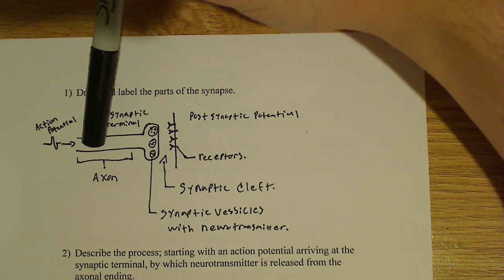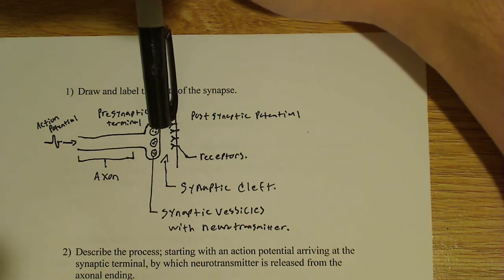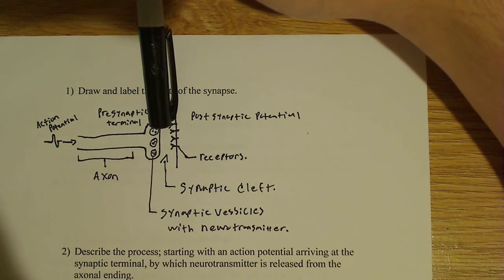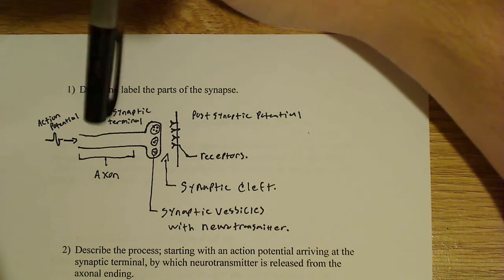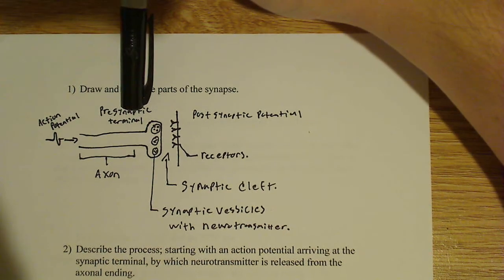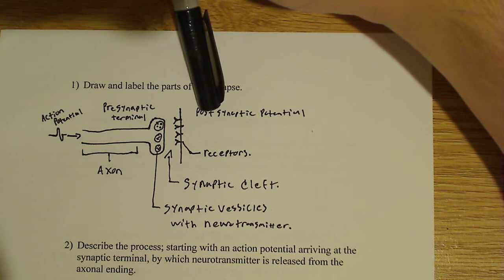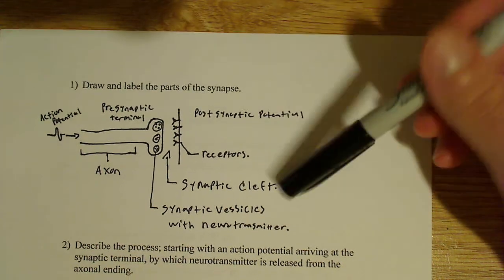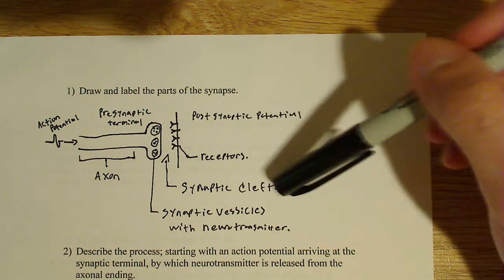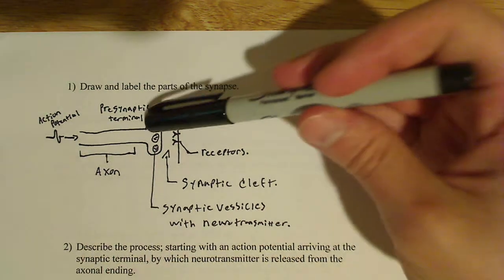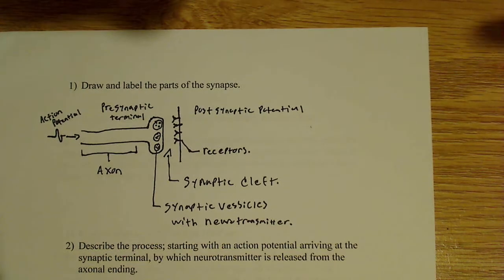So some action potential occurs. Here's our axon. Here's our synaptic vesicles with neurotransmitter. This whole section over here, this whole thing, is known as a presynaptic terminal. We have receptors on the postsynaptic terminal. And the neurotransmitter that releases from the vesicles gets released inside this synaptic cleft.